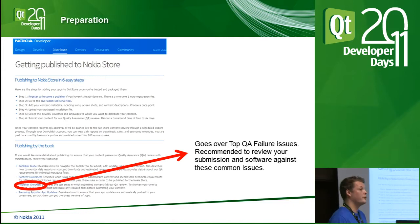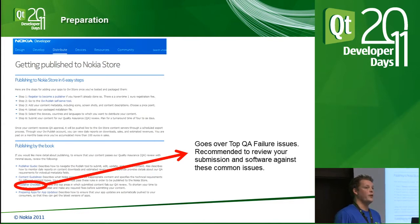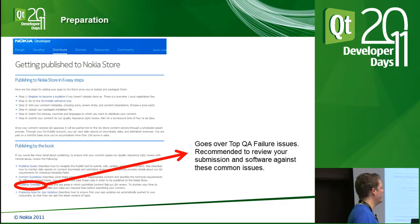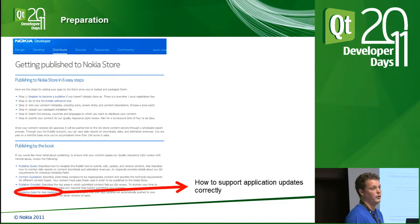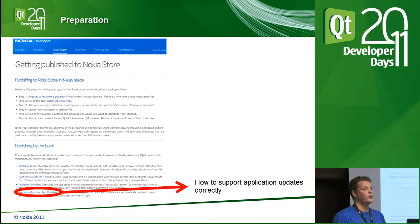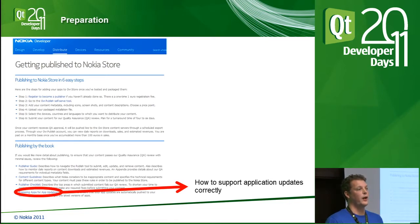Next is the top failures document — a supplement to the other docs listing the top 10 failures in the store right now. They cover all platforms, so not all will apply to Qt, but a few are applicable, such as packaging your app correctly with the right UID and using the right smart installer. Lastly, there's a document on how to package your app correctly if you want to take advantage of in-app update functionality, which enables the store client to notify users when a newer version is available.